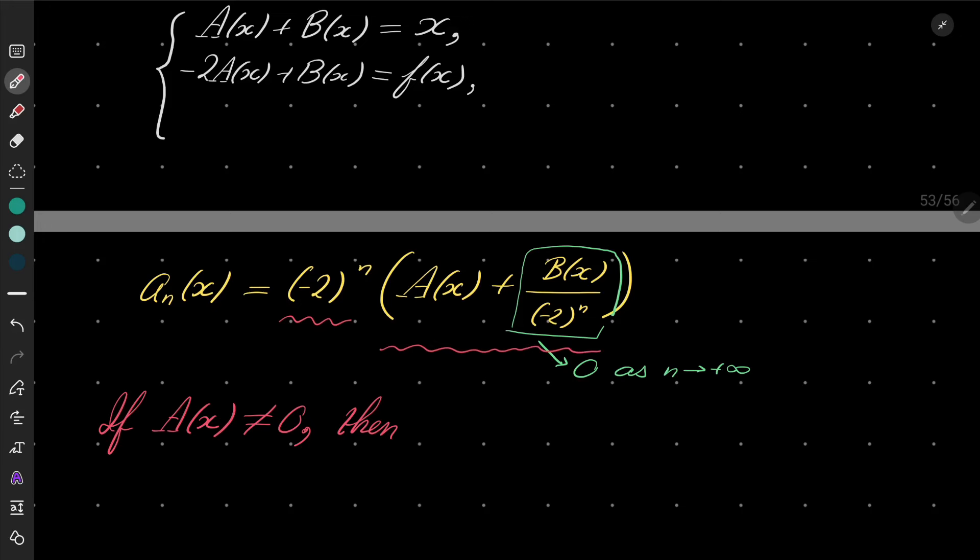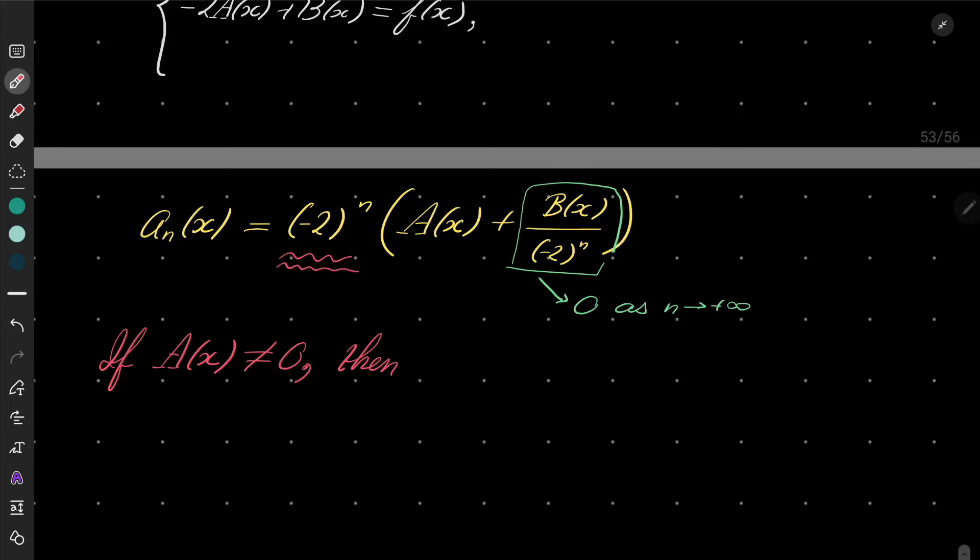So for sufficiently large n, this part will be either positive or negative, and this part alternates between pluses and minuses. So if a(x) is non-zero, then a_n(x) is certainly less than zero for sufficiently large integer n.